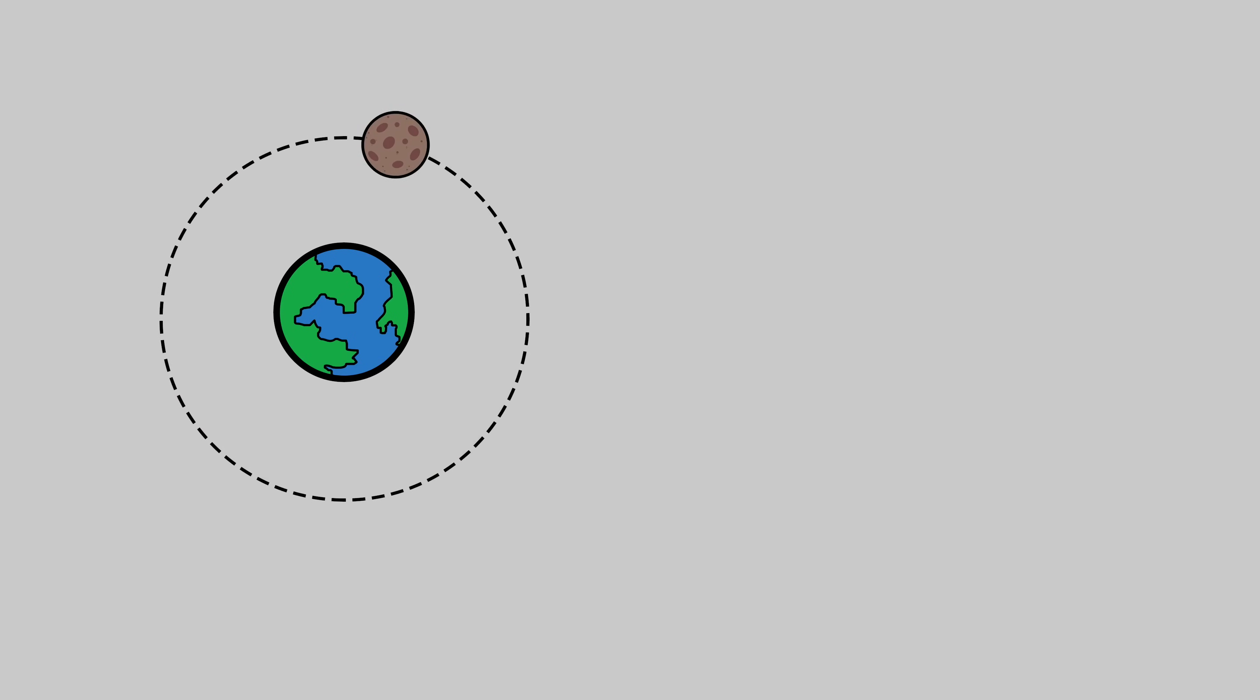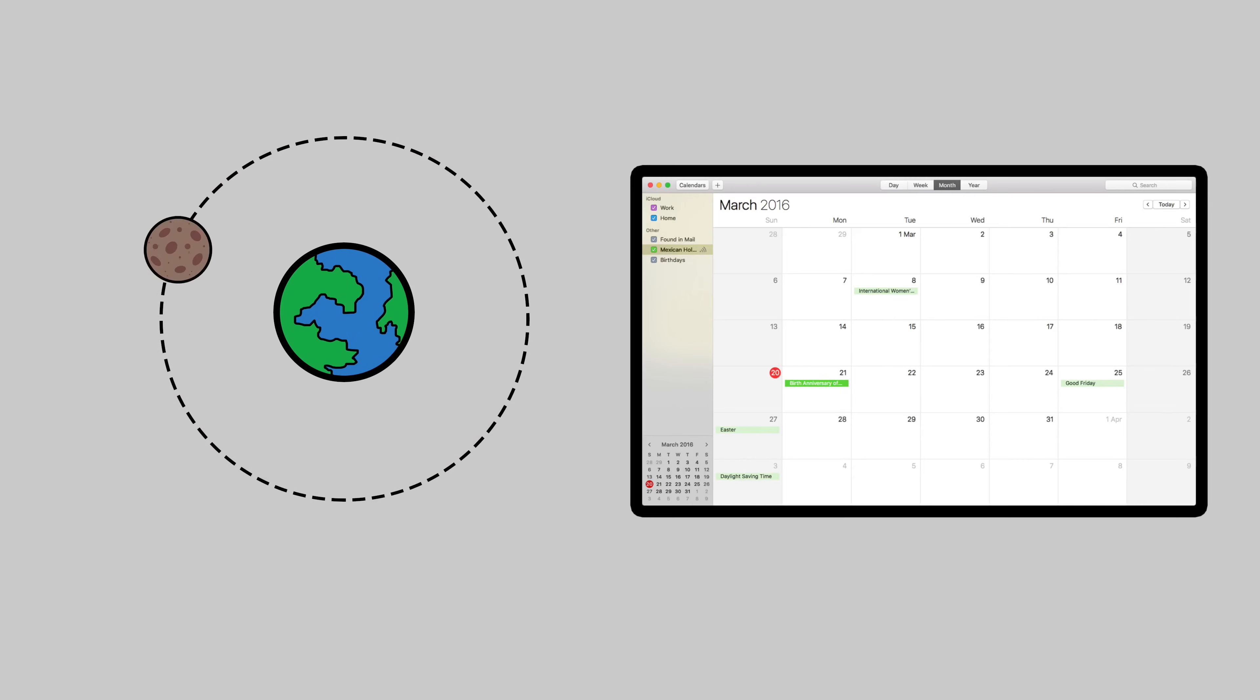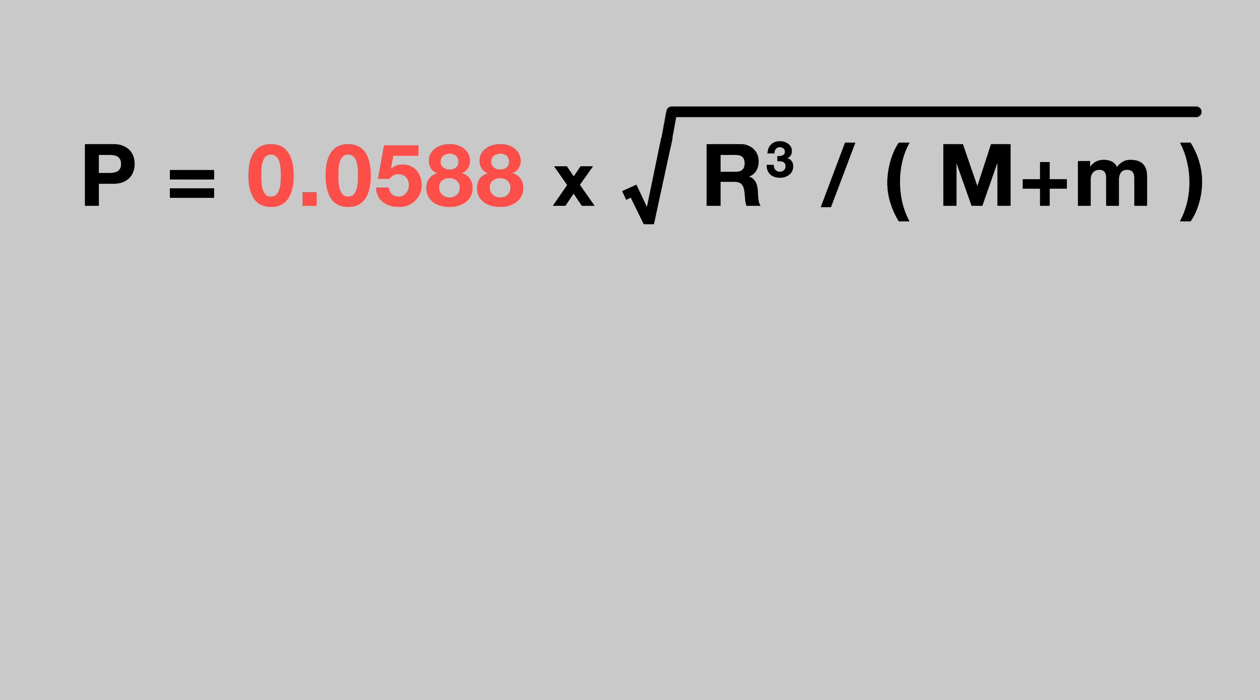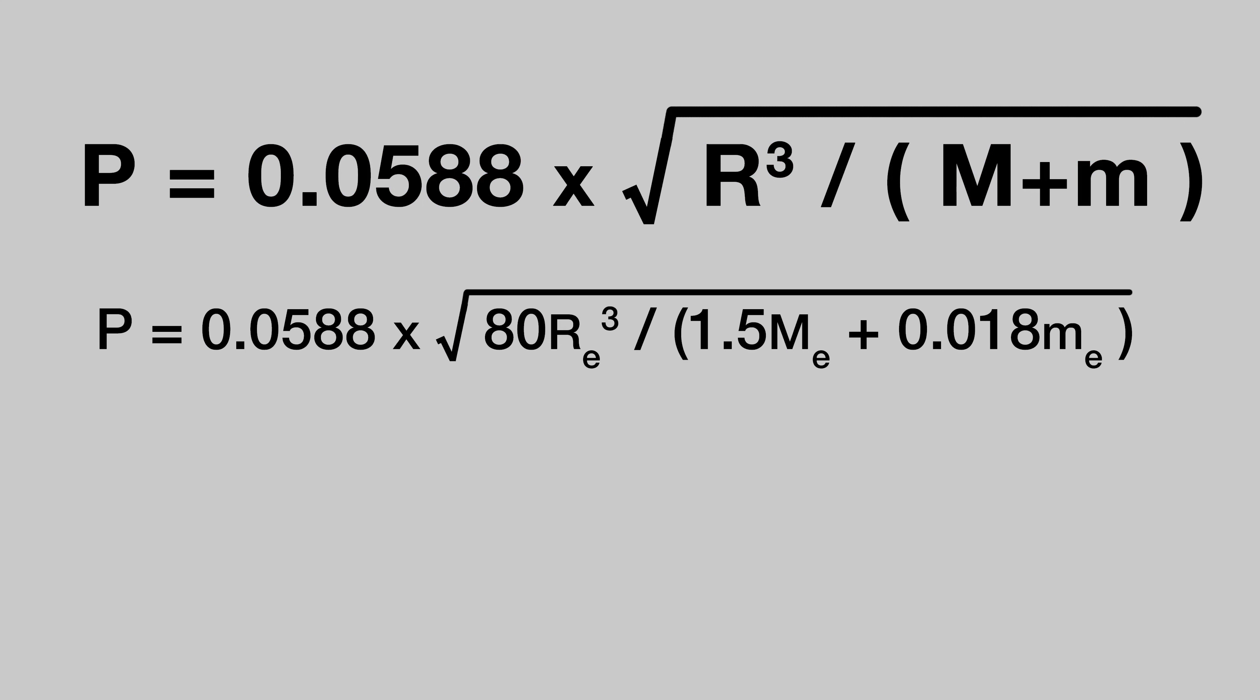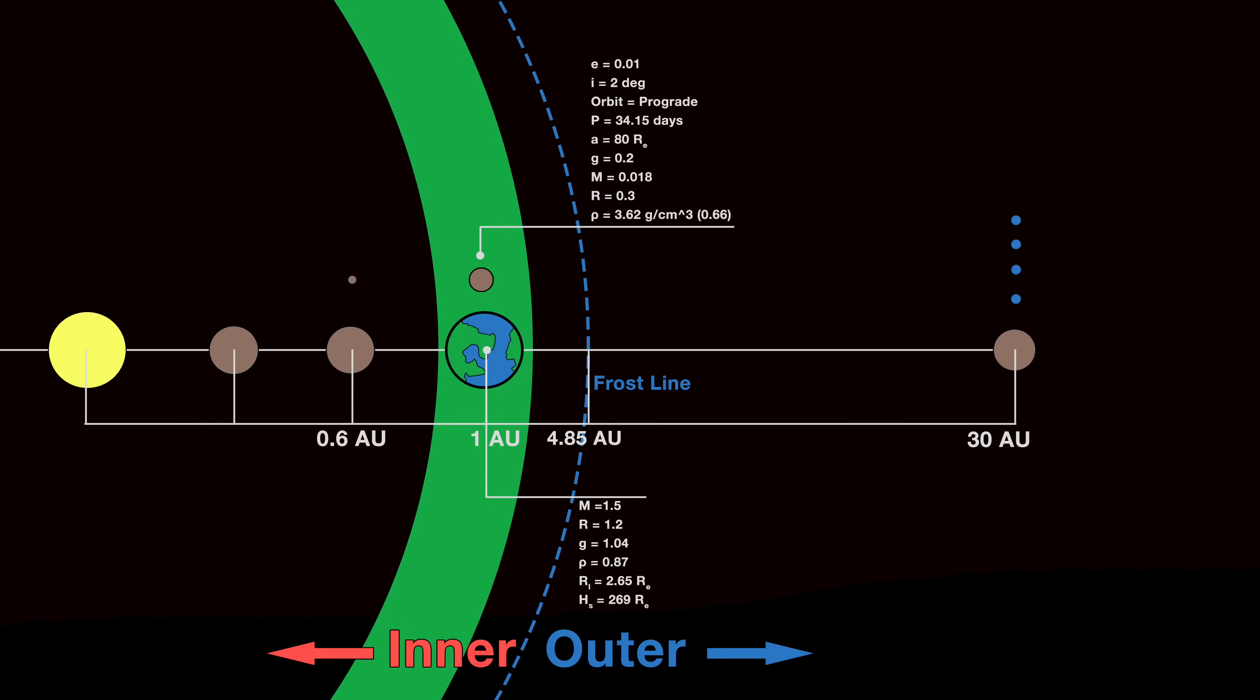Now, our moon's orbital period, which will play an important role in future calendar building, will be given by 0.0558 times the square root of the radius of the moon's orbit in Earth radii cubed, divided by the sum of the masses of the planet and the moon in Earth masses. After another bout of intense number vomit, we get an orbital period of 34.15 Earth days. So lunar months on this world will be roughly 34 Earth days long. And that right there is how one goes about constructing moons for habitable Earth-like planets.